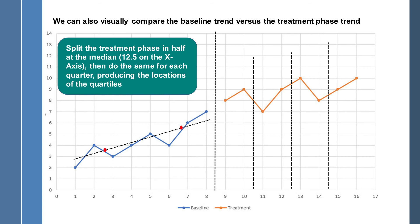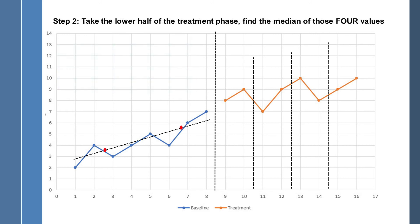So now, with the data chopped up like this, we can find the positions in which to put our red dots, which anchor the trend line for treatment. Step two, take the lower half of the treatment phase, find the median of those four values. So we're just going to concentrate on these four right here.